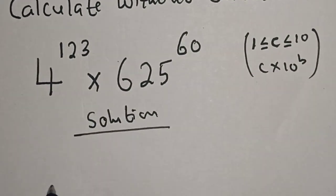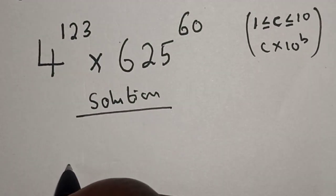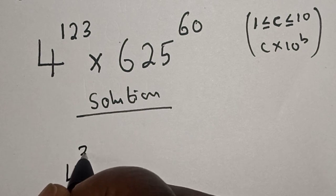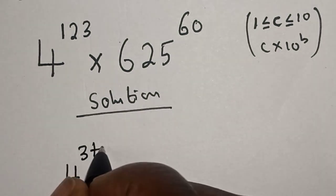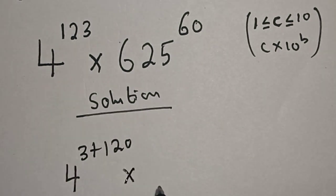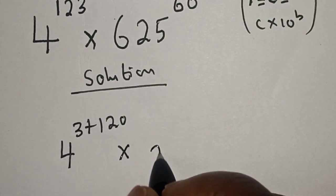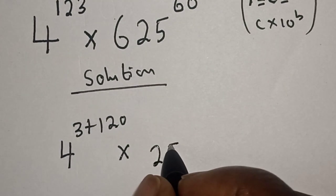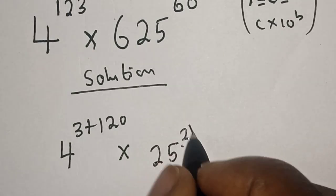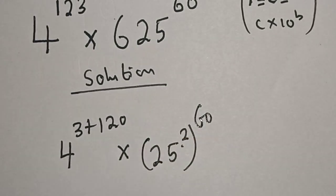We have 4 to the power of 123, which can be written as 4 raised to the power of 3 plus 120. Then 625 can also be written as 25 squared, raised to the power of 60.